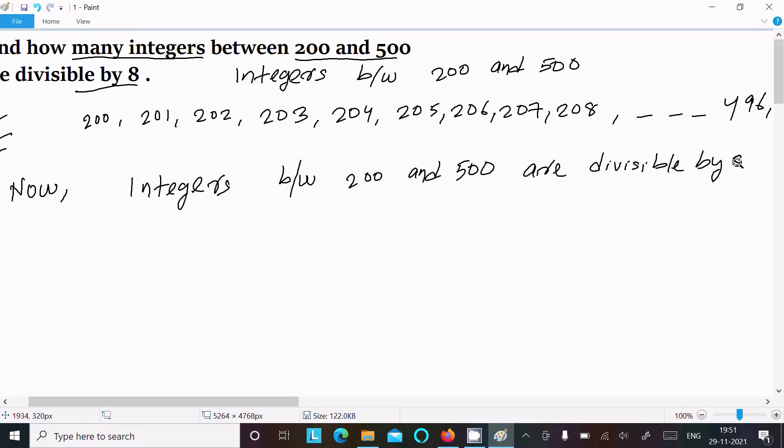Divisible by 8. So if you try to divide this, the remainder is not 0, this not 0, here this also not 0. If you try this, if you divide, the remainder is not 0.